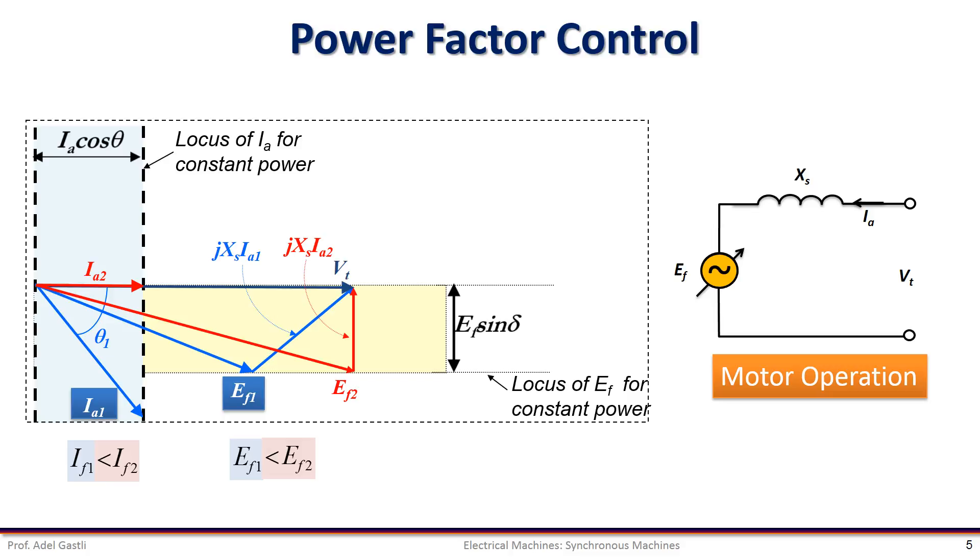For a higher excitation current IF2, we can have this phasor diagram, and for even higher excitation current IF3, we have this phasor diagram. As you can notice, the excitation current IF1 led to a lagging power factor, while the excitation current IF2 led to a unity power factor, and IF3 led to a leading power factor.